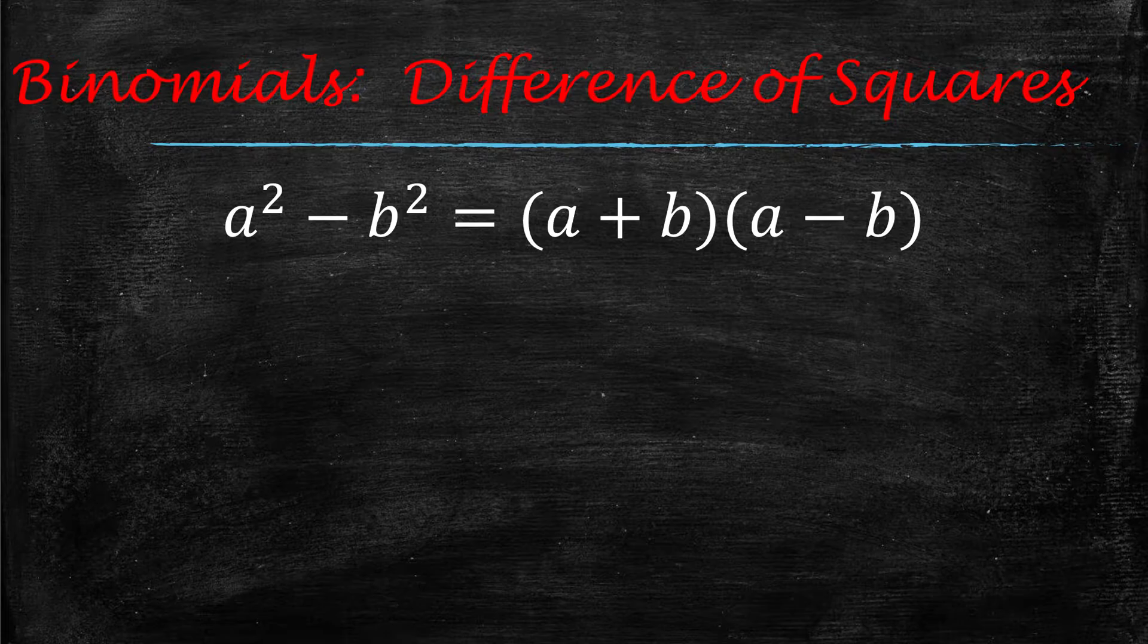The first factoring pattern is when you have a binomial. Binomial means two terms, and this is what we call a difference of squares. And the reason why it is called a difference of squares is because it is two perfect squares that are being subtracted.